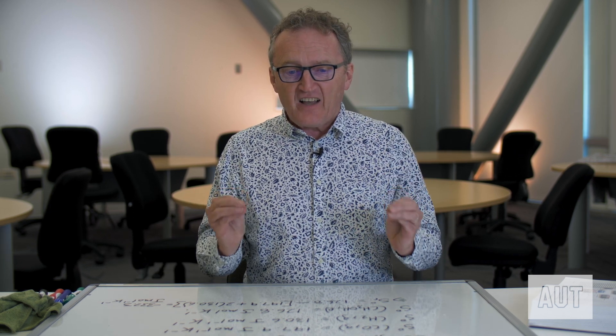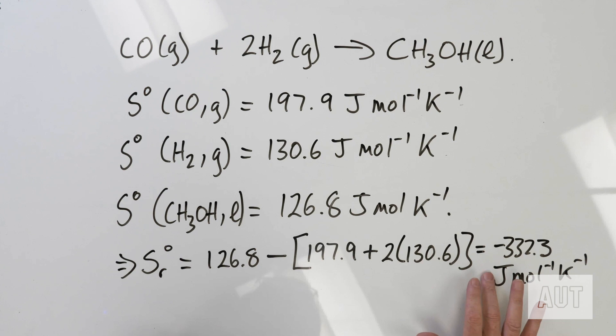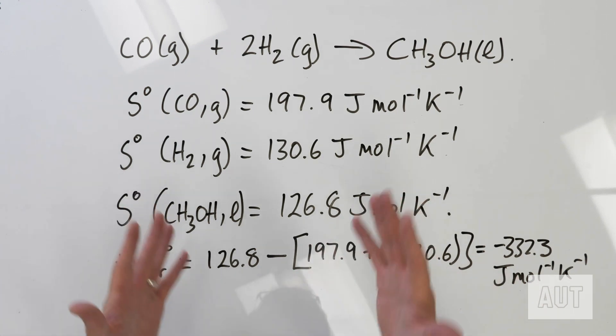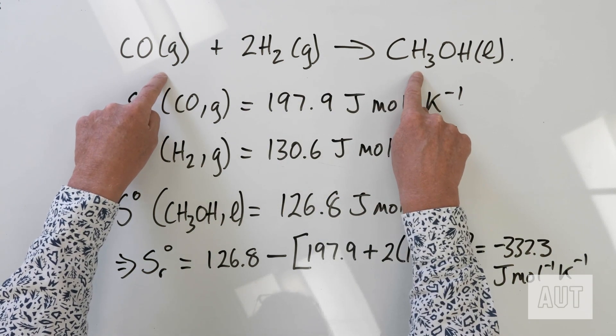The negative answer makes sense because we've got 3 moles of gas giving 1 mole of liquid — the entropies of the reactants are much higher than the entropy of the product, so the entropy change is negative. Now, we've got a negative entropy change. We've said entropy is related to spontaneity, so does a negative entropy change mean this reaction isn't spontaneous? No, it doesn't. What it means is that we need yet another thermodynamic function to figure out spontaneity. Enthalpy is not the whole story; entropy is not the whole story. In the next video, we will start talking about Gibbs energy.